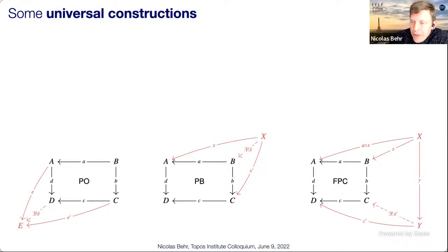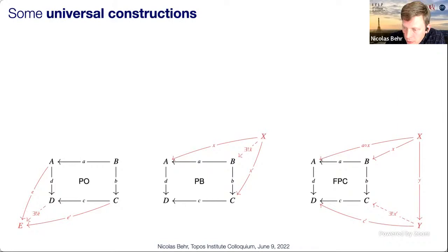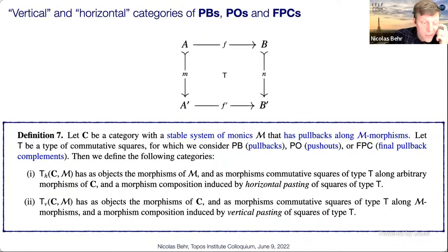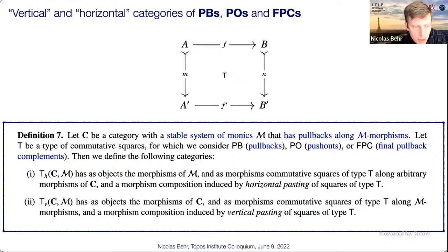A final pullback complement (FPC) is a commutative square that is a pullback, and for any diagram where the top triangle is commutative and the outer square is a pullback there exists a unique morphism such that the right square is also a pullback. A quick observation: any square whose horizontal or vertical arrows are identities is simultaneously a pullback, an FPC, and a pushout. This motivates defining six different categories for each type of square and composition direction.